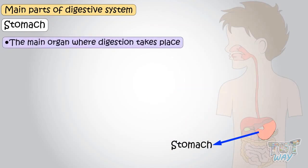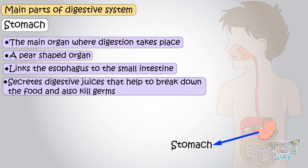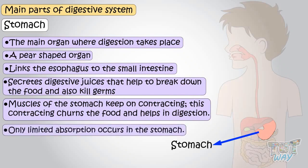Stomach — the stomach is the main organ where digestion takes place. It is a pear-shaped organ that links the esophagus to the small intestine. The stomach secretes digestive juices that help to break down food and also kill germs. Muscles of the stomach keep contracting, which churns the food and helps in digestion. However, only limited absorption occurs in the stomach — complete absorption will take place in the next organ.